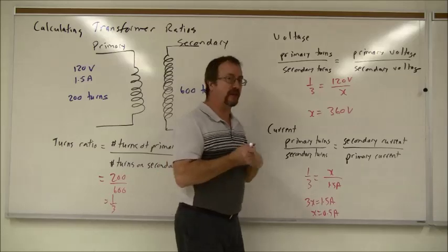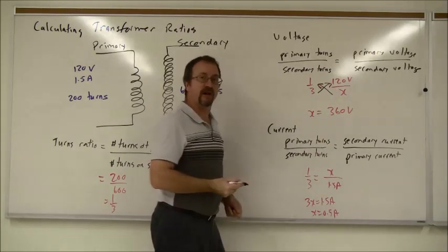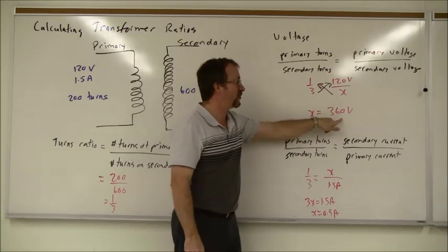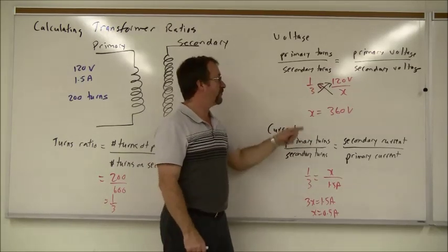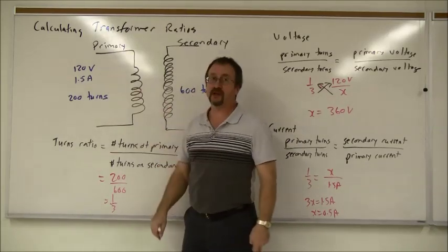Once I write that ratio, just with all the other ratio questions we've done, we can cross multiply. So one times x gives me x, three times 120 volts could be 360 volts. So the secondary voltage is 360 volts, whereas the primary was 120.